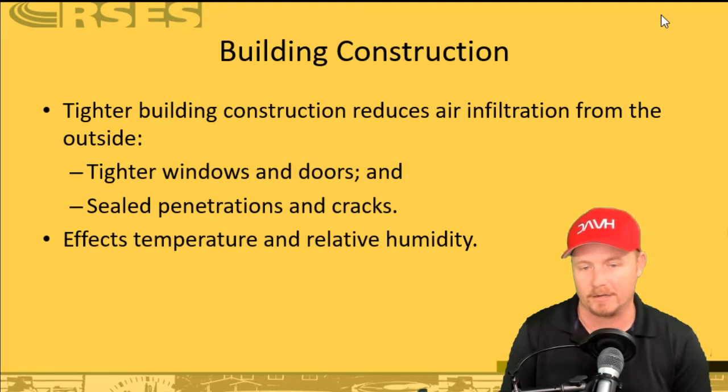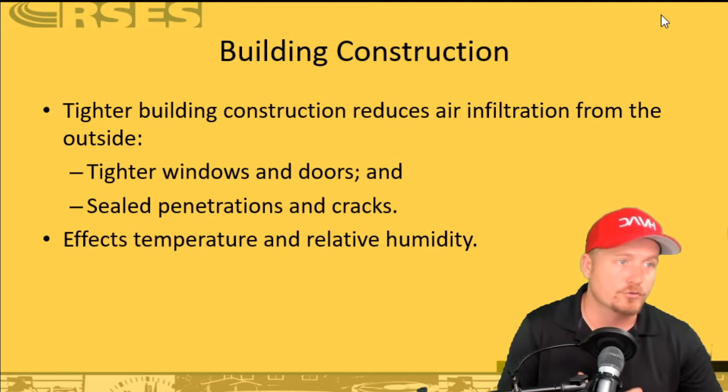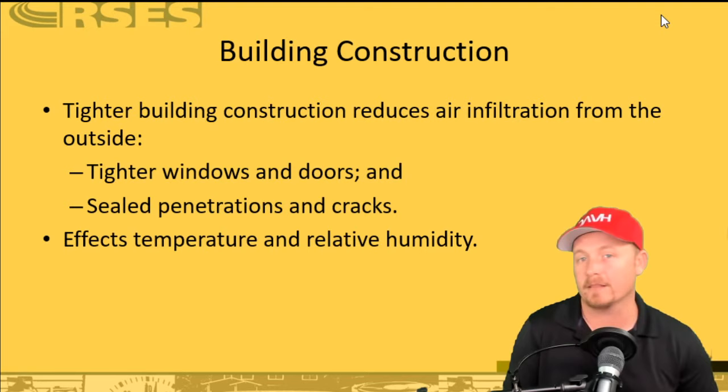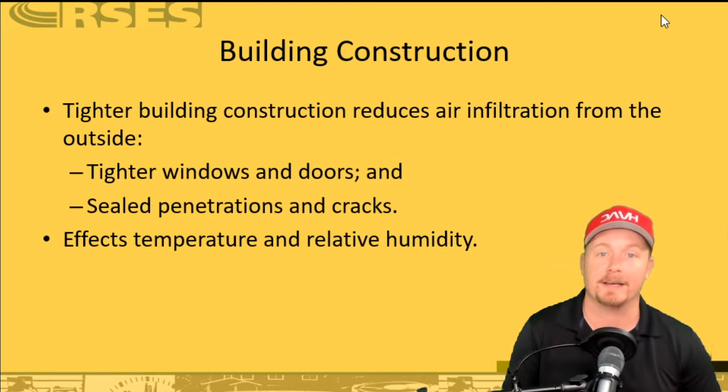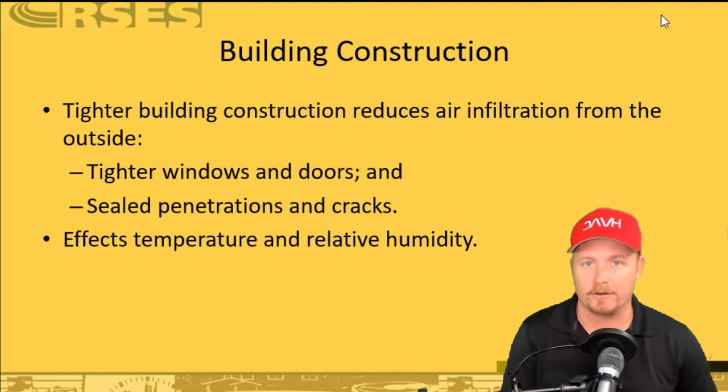Tighter structures result in more control. But control is a two-edged sword. If you're going to keep a building tighter, now you need to think about things like VOCs — chemicals in our house. You have to think more about things like CO and CO2 inside the home, because those can concentrate inside the building and make us sick. Whenever we're talking about building buildings tighter, that is generally a good idea, but we now have to think more about filtration and ventilation than ever before, as well as humidity control.